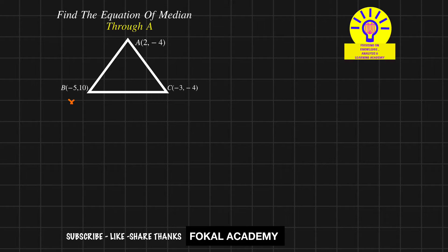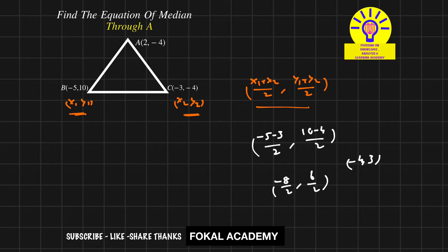Let B be (x1, y1) and C be (x2, y2). The midpoint formula is (x1 + x2)/2, (y1 + y2)/2. Now substitute these values: (-5 - 3)/2, (10 - 4)/2 equals -8/2, 6/2, which is (-4, 3). This is the midpoint of BC.